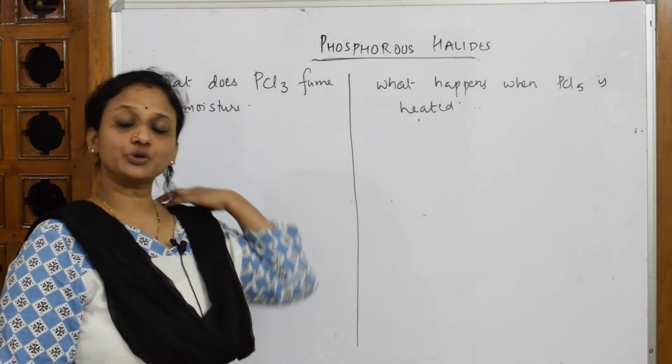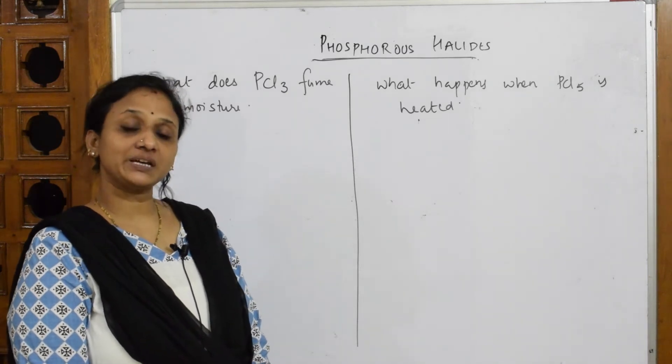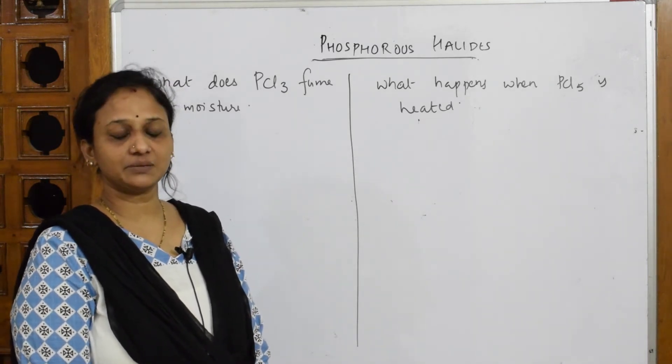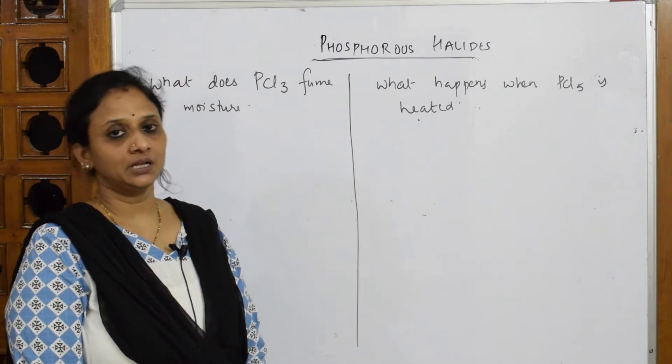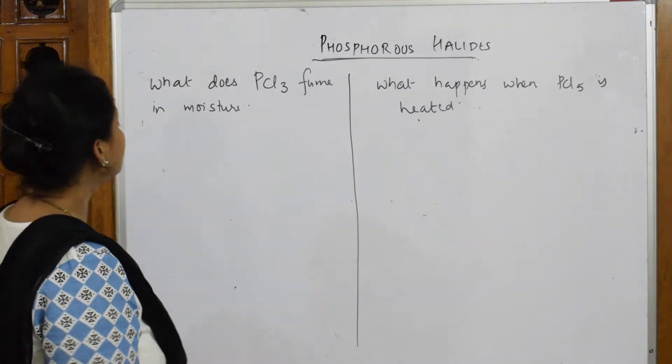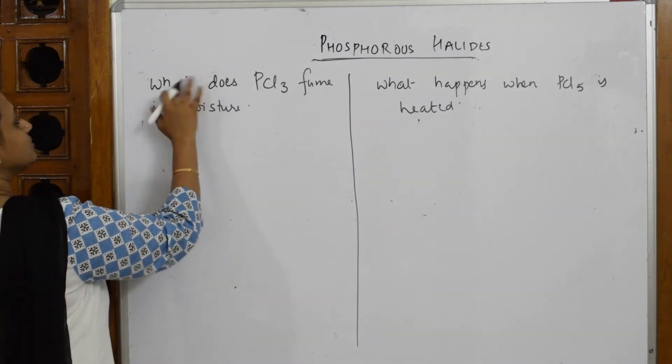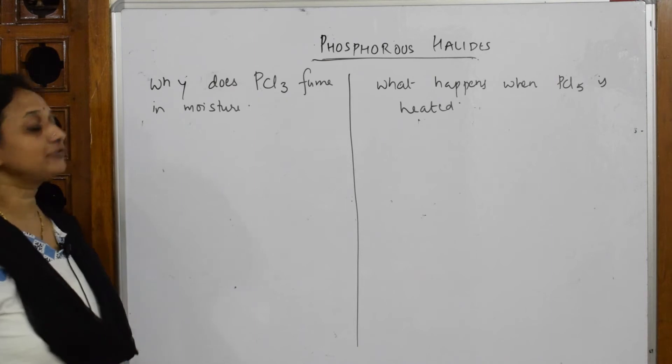Right, now let's come back and do two more questions on phosphorous halides. We've already seen how we prepared PCl3 and PCl5 from thionyl chloride and sulfuryl chloride. Let's see this now. What does PCl3 do? Why does PCl3 fume in moisture?